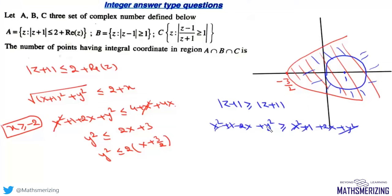x² and y² will cancel, and we get x is less than or equal to 0. That means all the points which lie in the second or third quadrant. We are talking about this region.